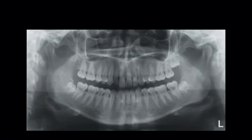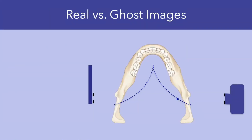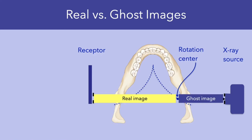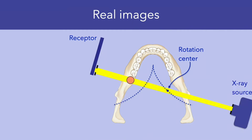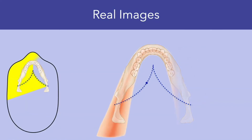Based on the projection geometry, there are three broad categories of images to consider: real images, double images, and ghost images. The first distinction is between real and ghost images, and this distinction is based on the position of the object relative to the X-ray source, the rotation center, and the receptor. Objects located between the rotation center and the receptor cast real images, whereas the images of objects between the rotation center and the X-ray source are referred to as ghost images. When projecting real images, only those structures located within the image layer will cast sharp images, whereas real images of structures outside the image layer will be less sharp. This graphic demonstrates the anatomic zone of structures that will be projected as real images, and again only those structures within the image layer will cast sharp images.